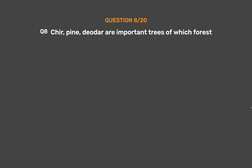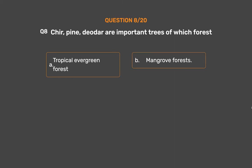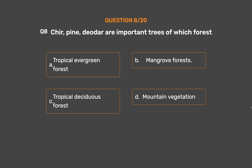Question No. 8: Chir, pine, and deodar are important trees of which forest? Option A: Tropical evergreen forest, Option B: Mangrove forests, Option C: Tropical deciduous forest, Option D: Mountain vegetation.